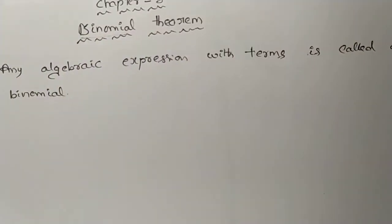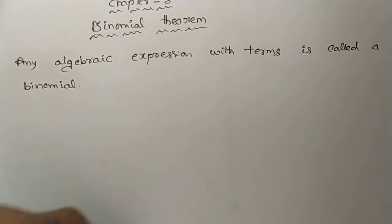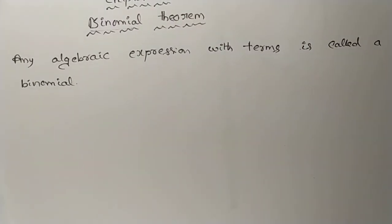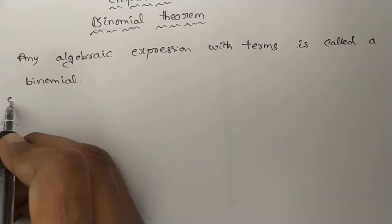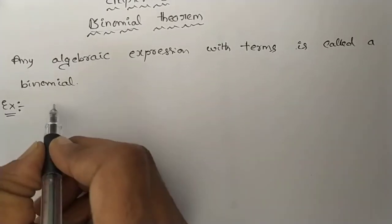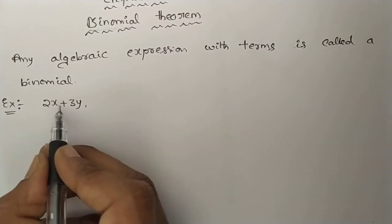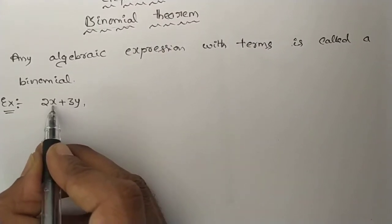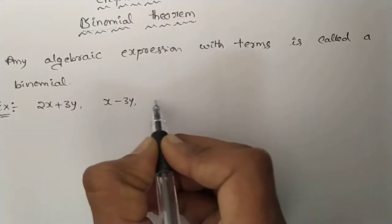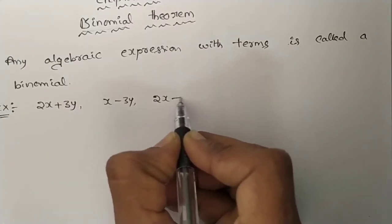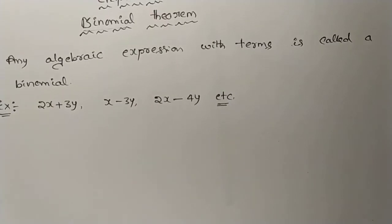Bi means 2. So any algebraic expression with two terms is called a binomial. For example, 2x + 3y is an algebraic expression with two terms — it is an example of a binomial. Similarly, x − 3y, 2x − 4y, etc. All these are examples of a binomial.